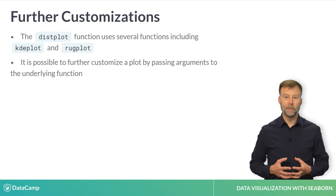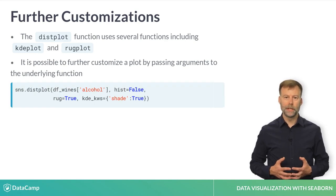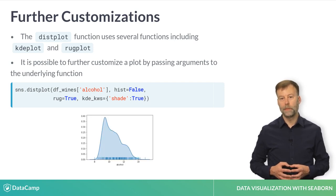There are many functions in Seaborn that build upon each other. The distplot function we have been discussing relies on using additional Seaborn functions such as the KDE plot and rugplot. By understanding this relationship, you can further customize Seaborn plots by passing additional arguments to the underlying functions.